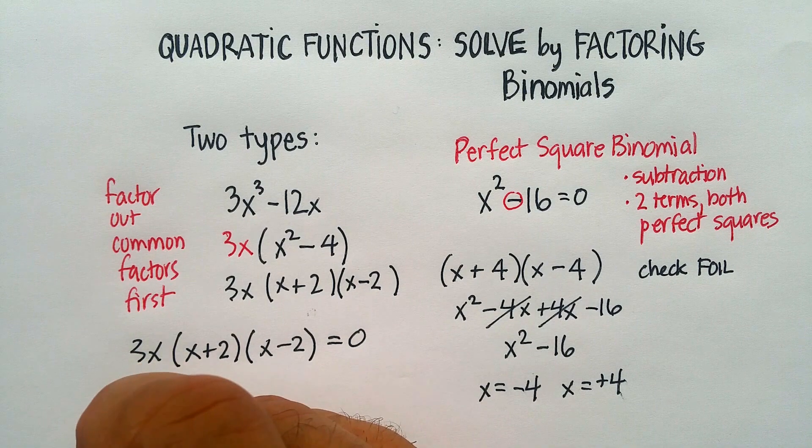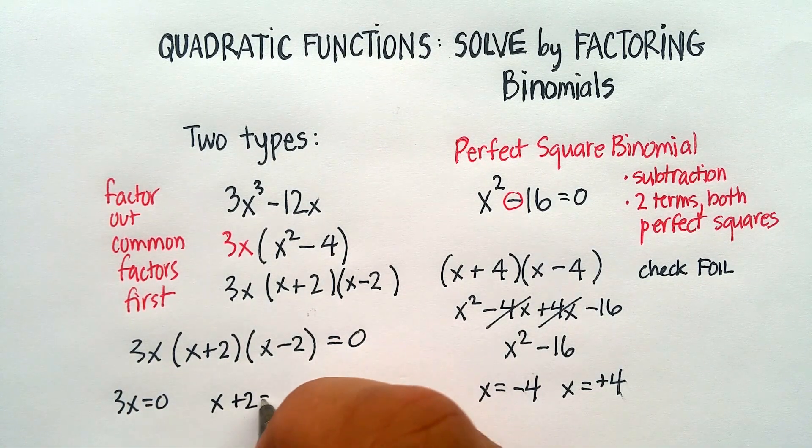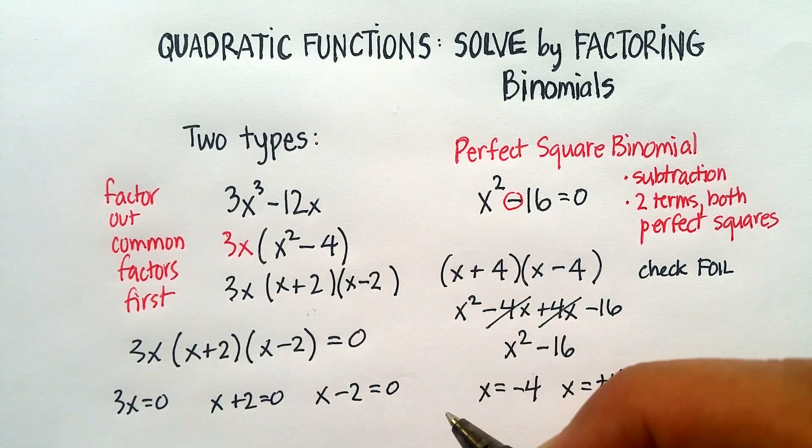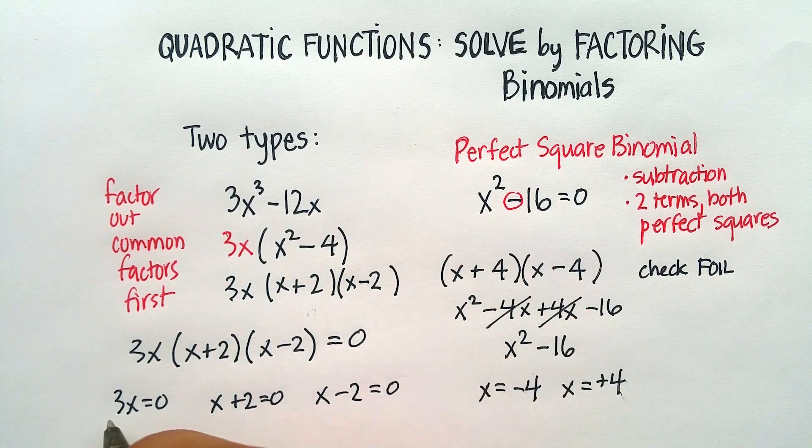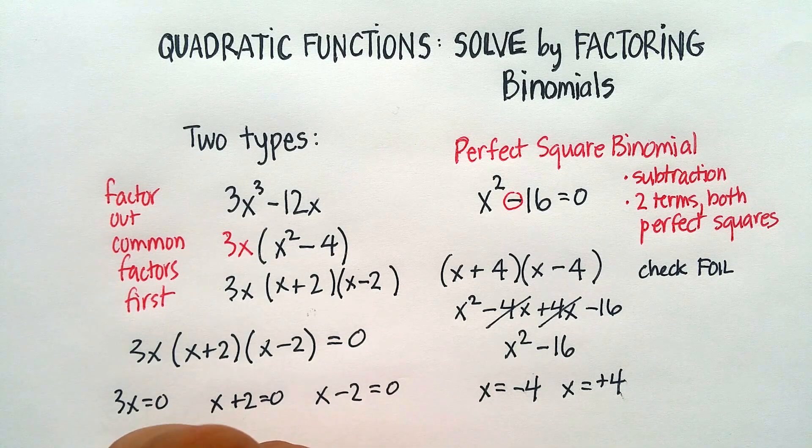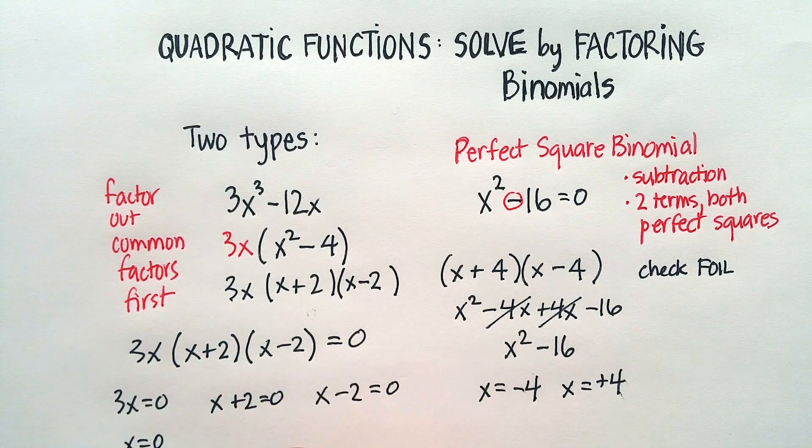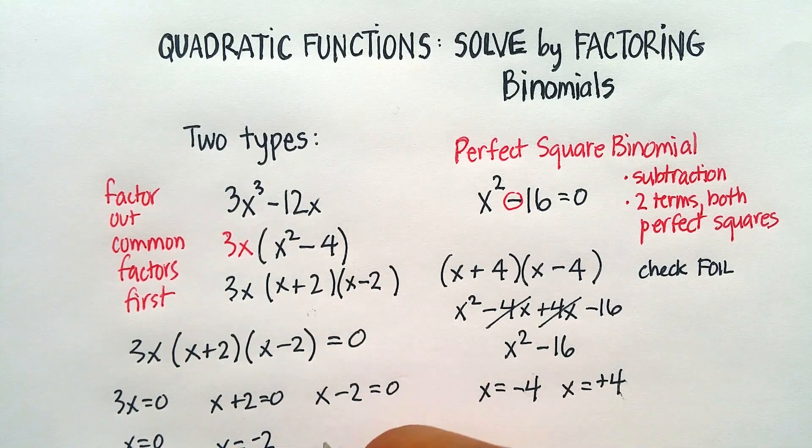Remember that the zero property says that one of these factors has to be zero in order for the whole thing to be zero. So I have three factors here, not just two. So I'm going to say 3x = 0 or x + 2 = 0 or x - 2 = 0, and I'm going to find the zeros for each one. x could be equal to 0, -2 would make this one work, and a +2 would make this one work.